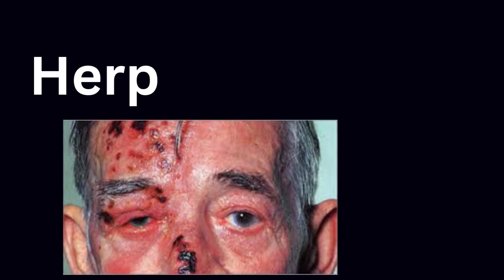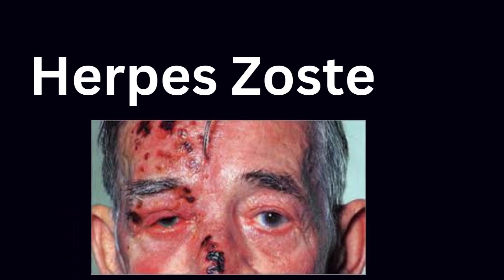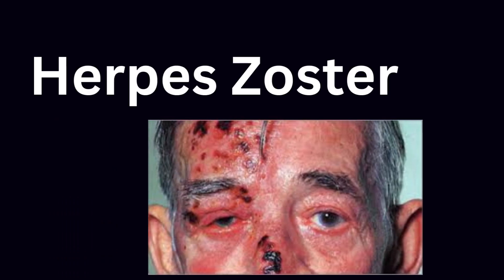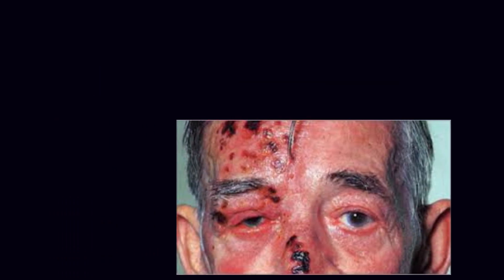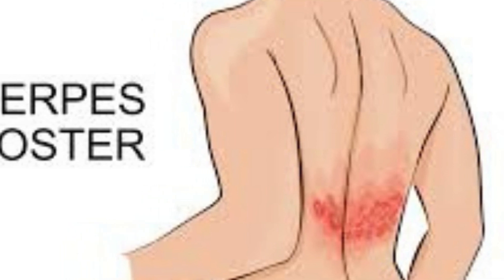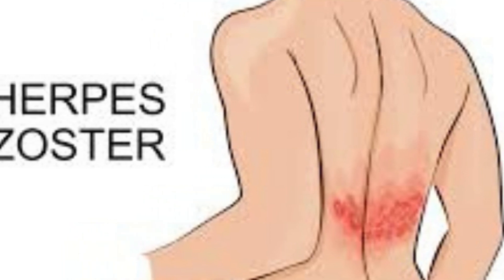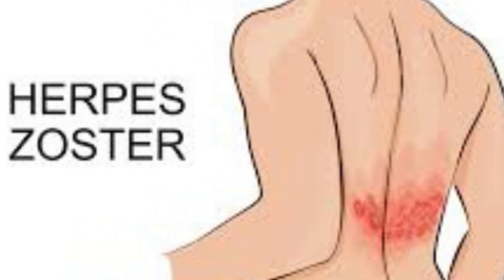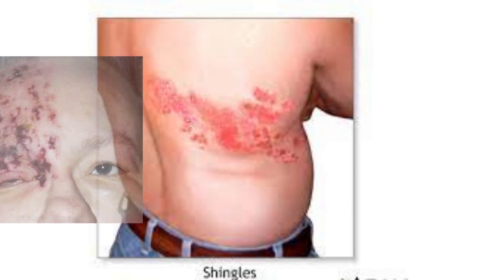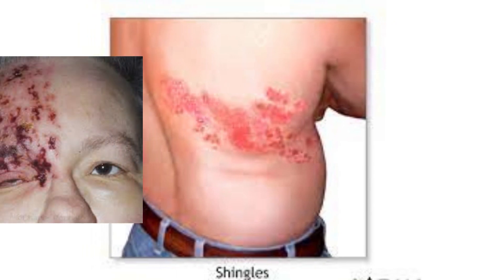2. Herpes zoster. Herpes zoster viral infection is caused by the same virus that causes chickenpox, and can cause an outbreak of sores around the genital area or the mouth.